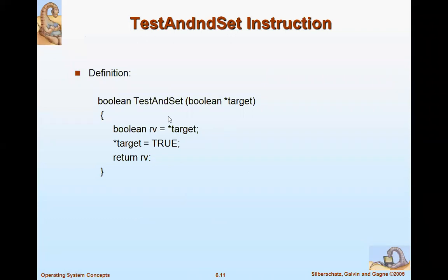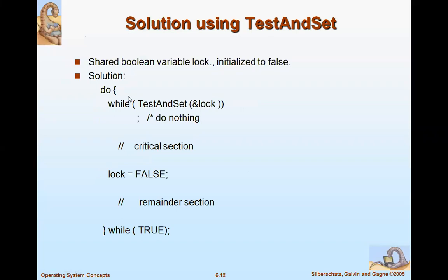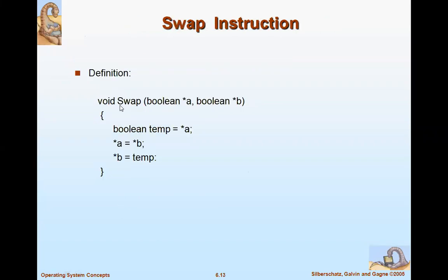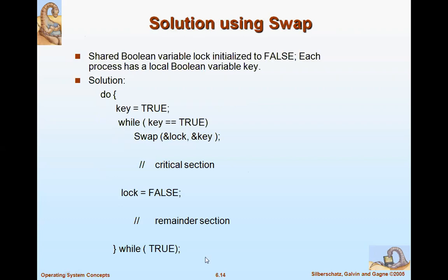In the hardware solution, we first set the key to true and then acquire the lock using swap. Once the key and lock become true, the process has acquired the lock and can enter the critical section. After execution, lock becomes false. We will cover semaphores in the next session. Please go through this material once more from the soft copy to understand synchronization and its implementation.